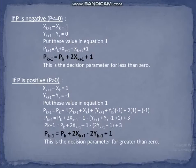The decision parameter plays an important role in calculating further solutions of the circle. If the decision parameter is negative, the next point will have an increment in the x-coordinate and the y-coordinate remains the same. This means xₖ₊₁ = xₖ + 1 and yₖ₊₁ = yₖ. Putting these values into equation 1, we get pₖ₊₁ = pₖ + 2xₖ₊₁ + 1.